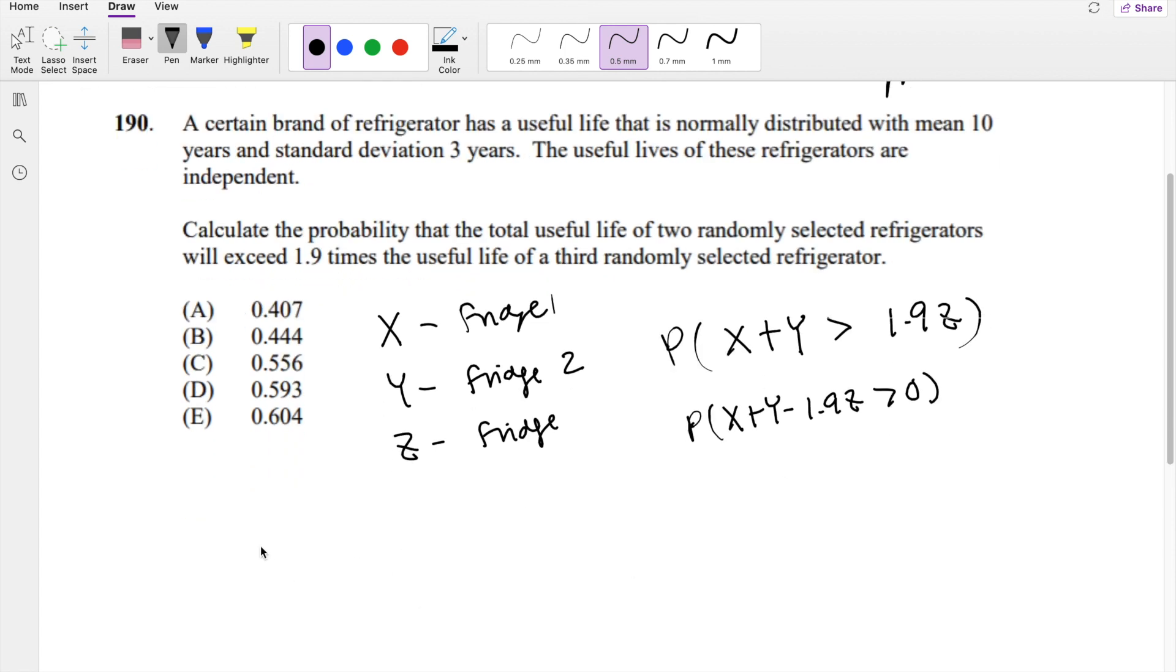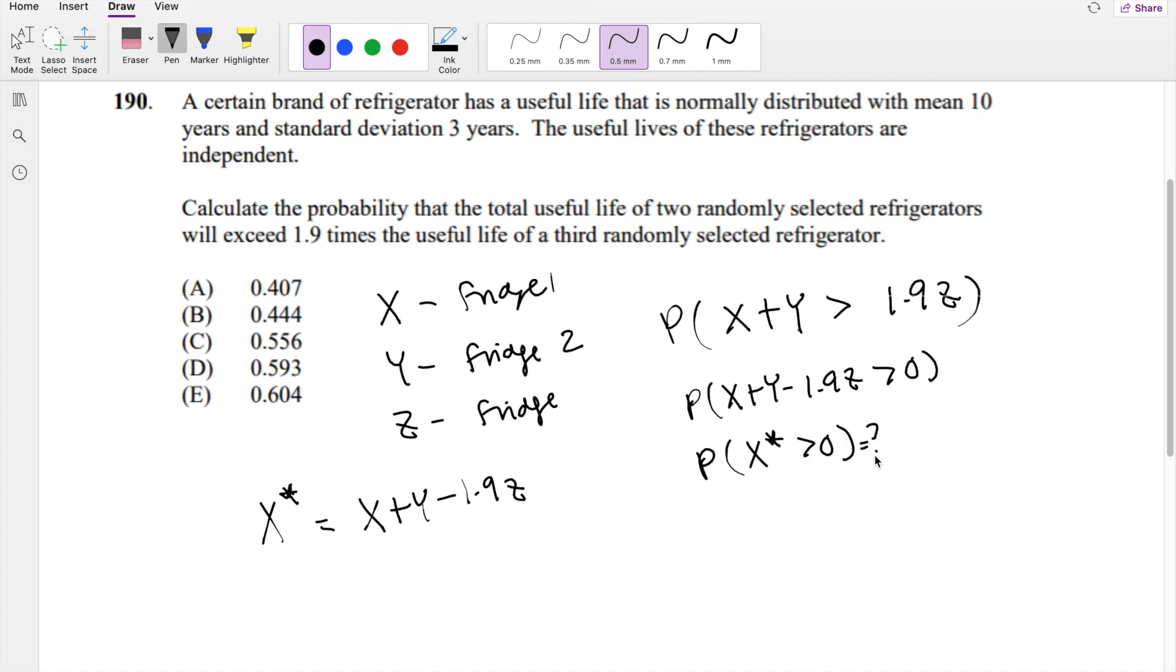I'm going to assign a new variable called X star. I always like doing X star for some odd reason. So this is equal to X plus Y minus 1.9Z. Alright, so what is the probability that X star is greater than 0? So that's what we're looking for. If we know, so what is the mean of X star?